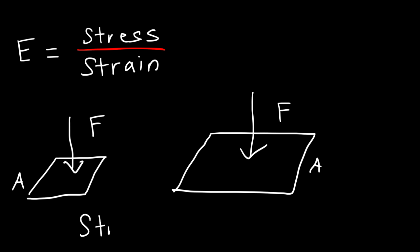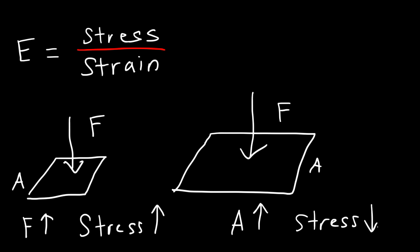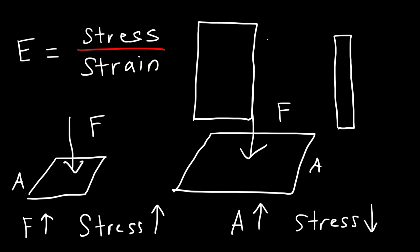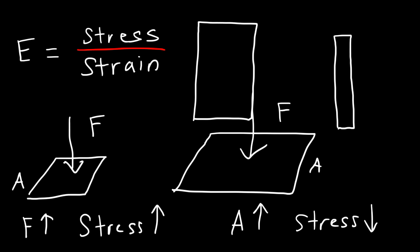Stress increases with an increase in force. However, you can decrease stress by increasing the area upon which that force is applied. So if you wish to decrease the deformation of a material, you can decrease the stress by increasing the area. If you have a very thin, long metal, it's going to be easy to stretch or compress compared to a much thicker metal, which requires a lot of force to change its length because the area is so large. It's easier to stretch or compress a thin rod as opposed to a thick rod.